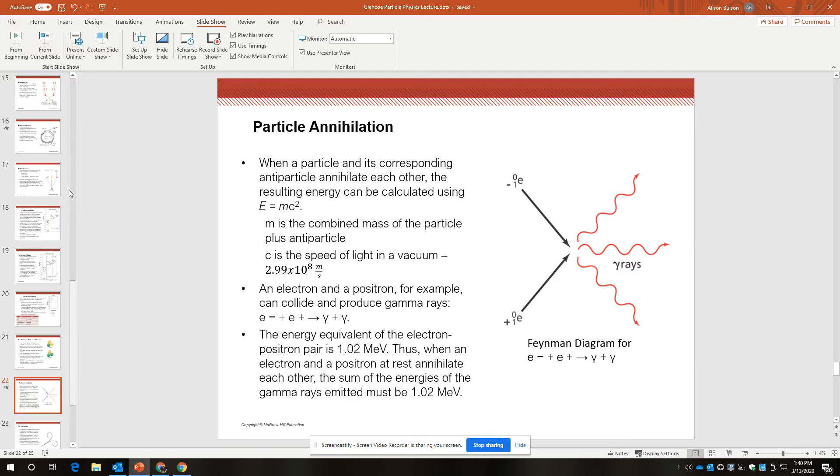So particles annihilate. When a particle and its corresponding antiparticle meet, they annihilate each other, self-annihilate. And the mass of those two particles becomes transformed into radiant energy, according to E equals mc squared, where m is the mass of the particle and antiparticle and c is the speed of light in a vacuum, about 3 times 10 to the 8 meters per second.